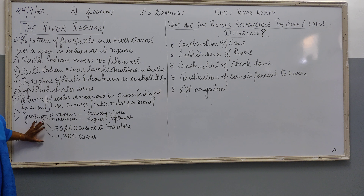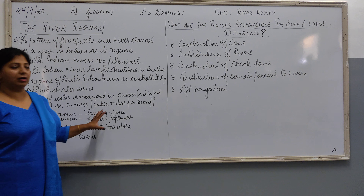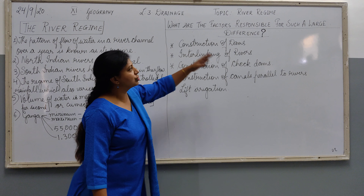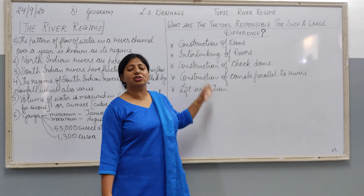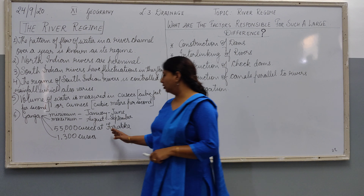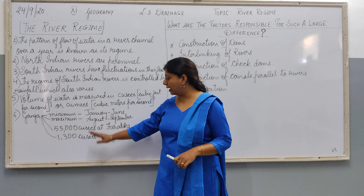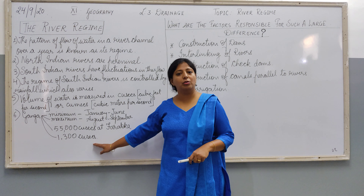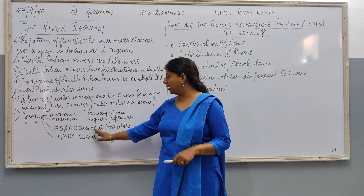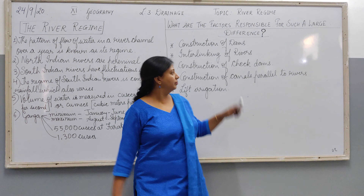What are the reasons for the minimum water level in the Ganga, and what are the factors responsible for such a large difference? At January it has 1,300 cusecs, whereas in August and September it has 55,000 cusecs.